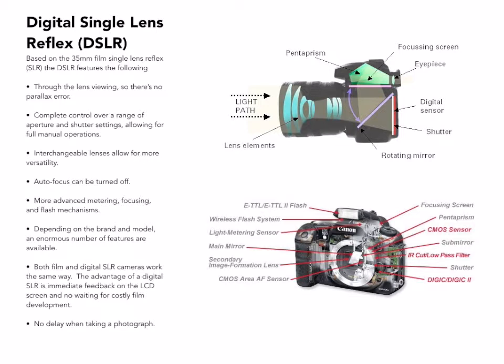The digital single-lens reflex camera is, as I mentioned, pretty much the same with that one exception of the light passing through, striking a mirror, bouncing up into a prism, and then back towards the eyepiece. At the time of exposure, the mirror flips up and that exposes the shutter. The shutter opens and light passes through for whatever duration you decide. At the end, the shutter closes, the mirror drops down, and you're back to where you were, ready to take the next picture.